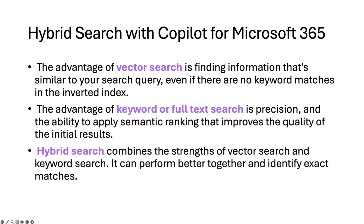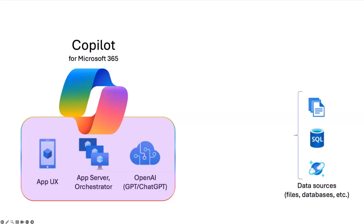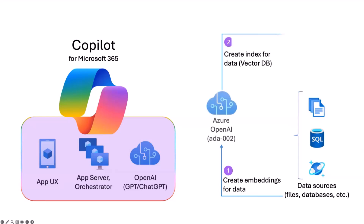The combination of these two worlds brings the strength of both, and they perform better together using both Vector and Keyword. In this example, we'll use Copilot for Microsoft 365 as our chat app. We have data sources which contain files — Blob Storage, Table Storage, Cosmos DB, SQL Database, any type of data you can imagine. We create embeddings of our data using the Azure OpenAI ADA model. Azure AI Search already provides a Vector Database, so you don't need an additional database. The indexing is stored inside Azure AI Search.